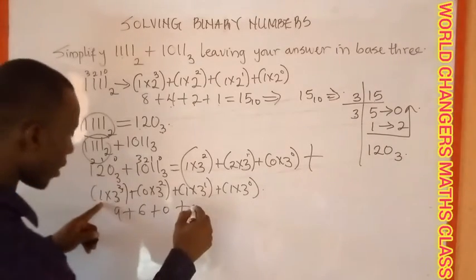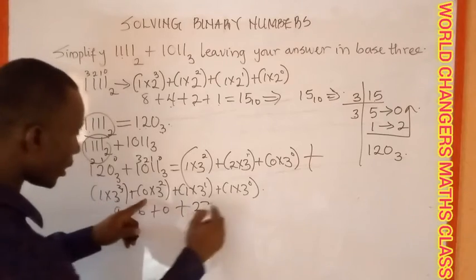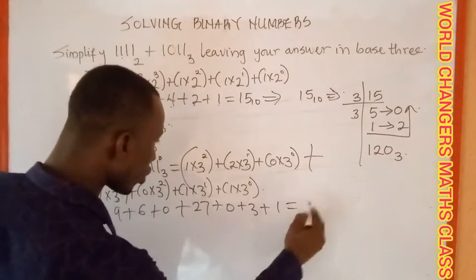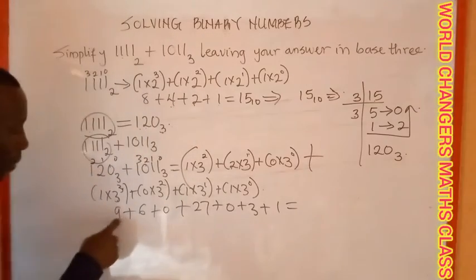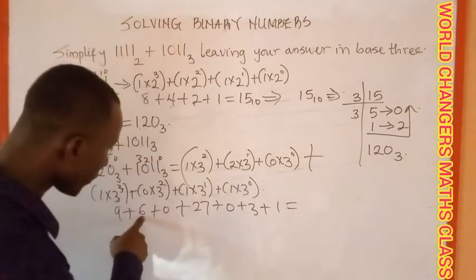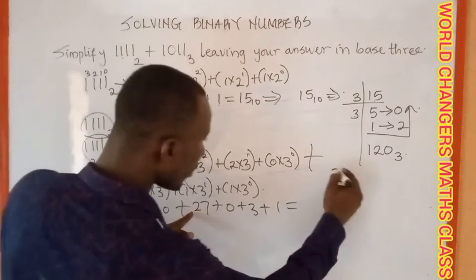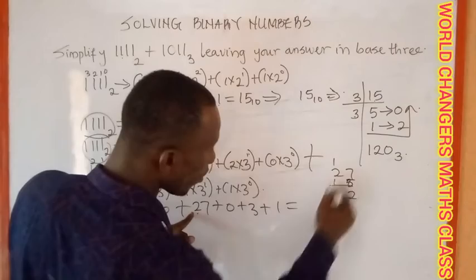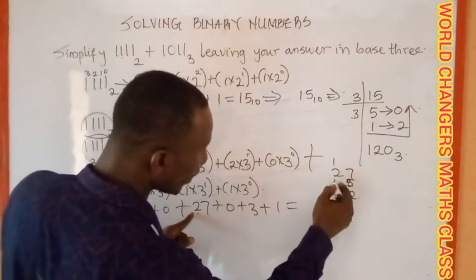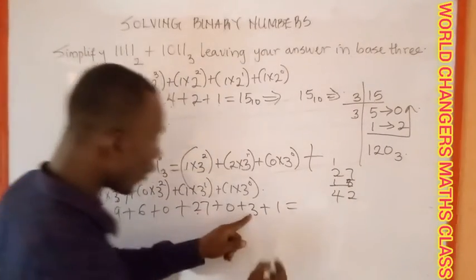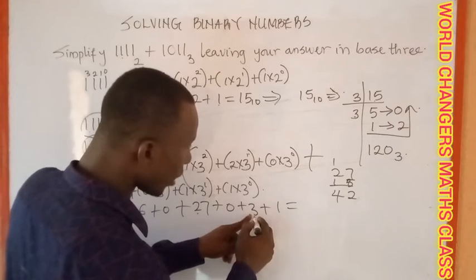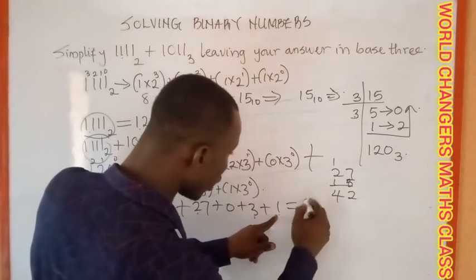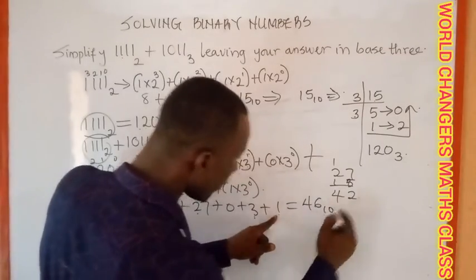27 multiplied by one gives me 27. So adding everything together: nine plus six gives me fifteen. Fifteen plus 27 gives me 42. 42 plus three gives me 45. 45 plus one gives me 46. So we have 46 in base ten.